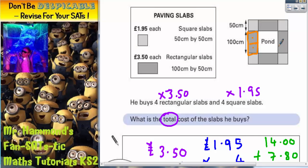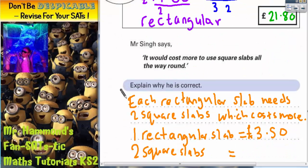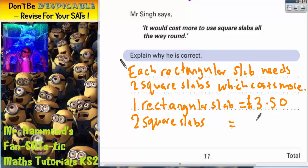And it's a square slab, don't forget, is £1.95. So if we could just show that two of them are more than £3.50, then we've done it. So it's £1.95 times by 2.